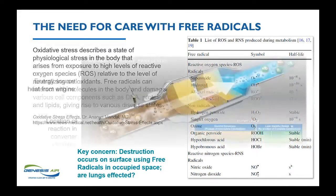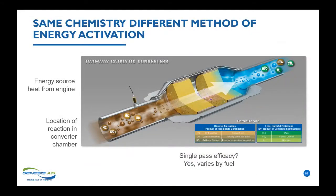A catalytic converter uses energy from your engine — it's a thermal oxidizer. The heat from the engine takes dirty particles, processes them through the reaction zone where hydroxyls are created, and produces cleaner air out the exhaust. The energy is the heat from the engine, the location is controlled within the catalytic converter, and you can measure its first-pass efficiency, which will vary from fuel to fuel. Now let's look at another type of product that creates free radicals in a space: ionizers and photohydroionizers.